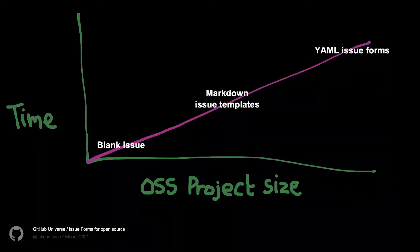GitHub has a responsibility with the tools that we build and the platform that we provide to help with that. The more popular an open source project may be, the more friction that they need for their public issues. And this is where issue forms come in.